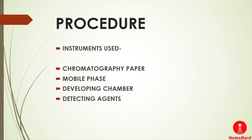The chromatography paper serves as the stationary phase. The mobile phase includes different types of solutions or mixtures of solutions — a common example is methanol and water mixed in a ratio of 4:1. The third equipment is the developing chamber, which can be made of glass beakers, stainless steel, or plastic, used to support the stationary paper. The fourth instrument is the detecting agent, used for detection and identification of separated components.